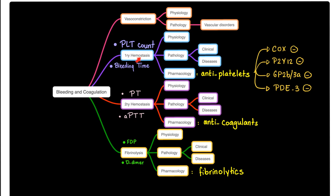How do you measure primary hemostasis? You use platelet count for platelet number, and bleeding time for platelet function. But is bleeding time the only test for platelet function? No, we have many tests — we have bleeding time and today's topic, aggregometry.